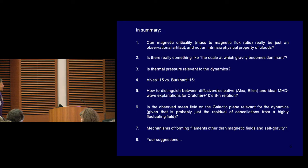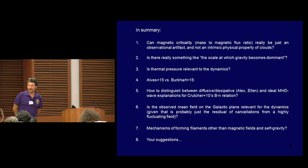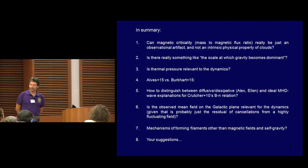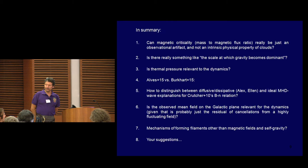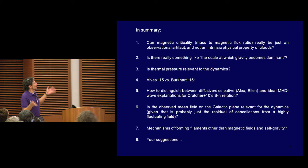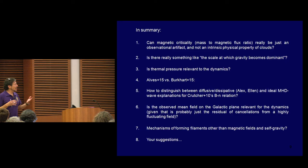One point on question seven: hydrodynamic shocks can also form very long skinny filamentary structures — you don't need self-gravity or MHD to get those kinds of filaments. Shocks are another mechanism we should be thinking about to form filaments. And since this has been a theory-dominated discussion, for the observers and the interaction between observers and theoreticians: how can we distinguish between the different mechanisms?